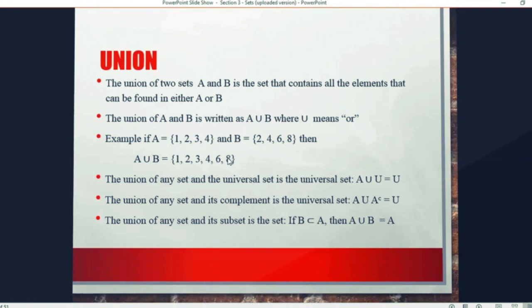A union B is everything in A, combined with everything in B, but you don't need to repeat. So you don't need to write 1, 2, 2, 3, 4, 4, 6, 8. You don't need to repeat elements if it's already there.